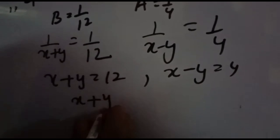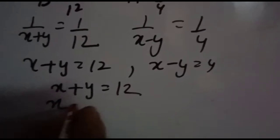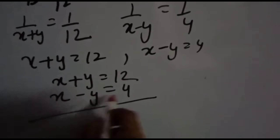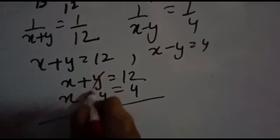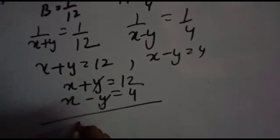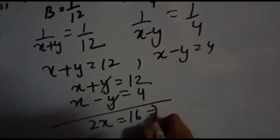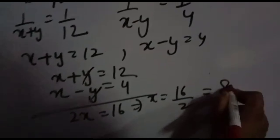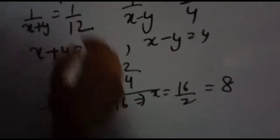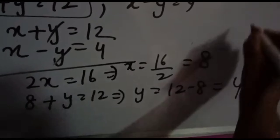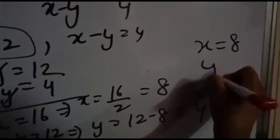Use the elimination method again. Add the two equations: x plus y equals 12 and x minus y equals 4. The y terms cancel, giving 2x equals 16, so x equals 8. Substituting x equals 8 into x plus y equals 12, we get y equals 12 minus 8, which is 4.